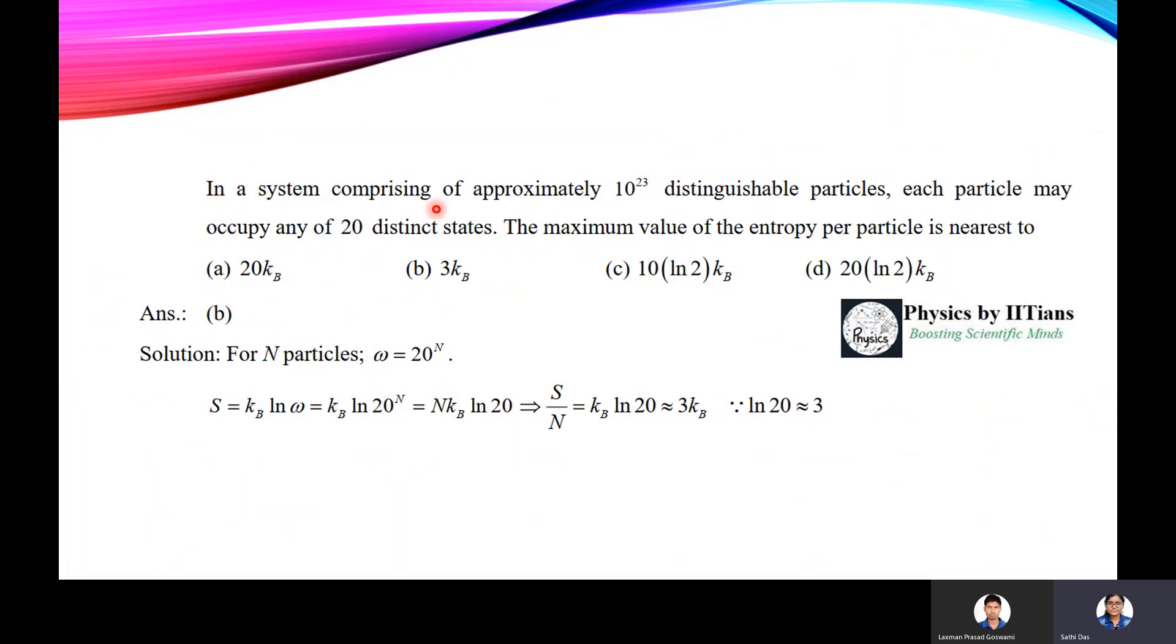The first question is: In a system comprising of approximately 10 to the power 23 distinguishable particles, each particle may occupy any of 20 distinct states. The maximum value of the entropy per particle is nearest to 20kb, 3kb, 10 ln 2kb, or 20 ln 2kb.